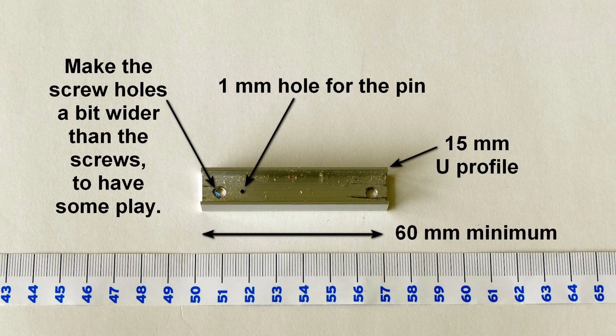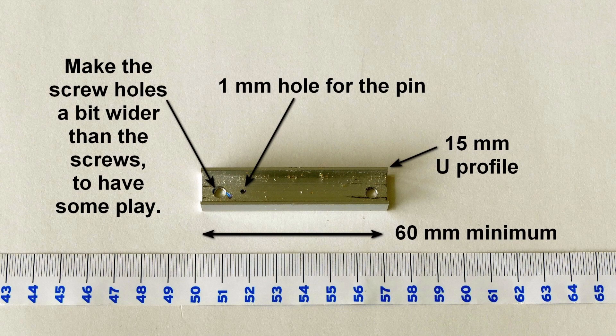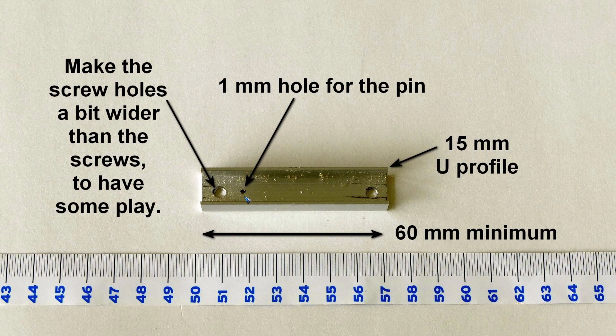Then we need two screw holes left and right. Make them a little bit larger than the diameter of the screw so that you have a little play when you mount this strip under the table. And then the important part, a 1 millimeter hole. Not too close to the screw hole because in the table we need to saw a bigger hole, let's say 8 millimeters, to have some room for the pin to move around.